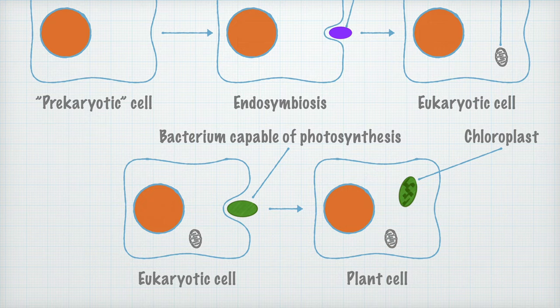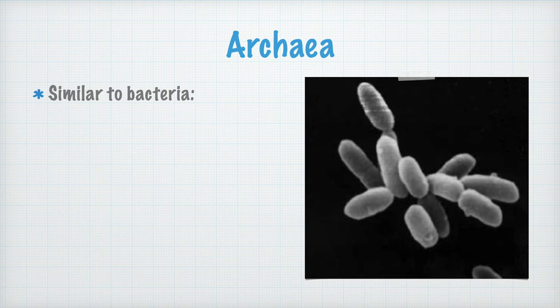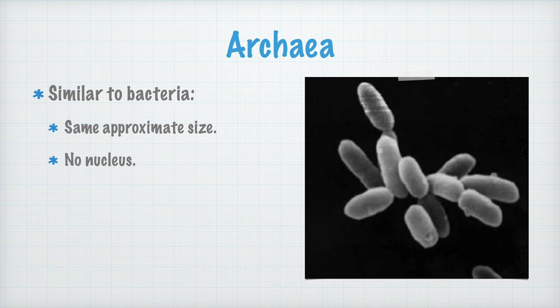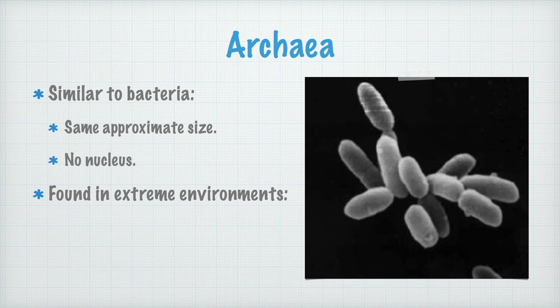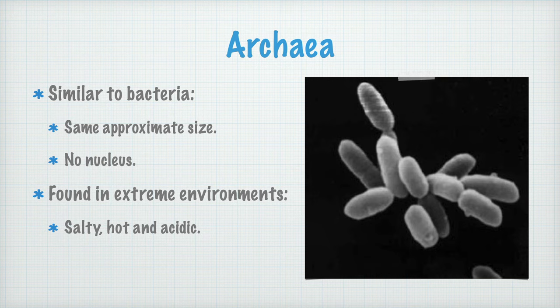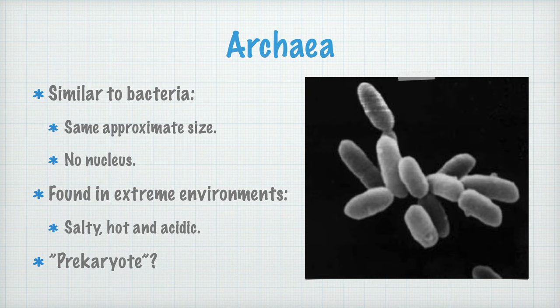Now let's study the archaea. From the looks, they're quite similar to bacteria — approximately the same size, and they both lack nuclei. Something that sets them apart from bacteria, however, is that they are often found in extreme environments: extremely salty, extremely hot, or extremely acidic environments. Their biochemistry is also quite different from bacteria. Because of this, they were considered more original than bacteria, hence the name 'archaebacteria' — literally, old bacteria. But they are not bacteria, and thus should only be called archaea. It probably was an archaeon that was the pre-karyotic cell that eventually evolved into a eukaryotic cell, as we've learned by comparing DNA of Lokiarchaeota organisms to eukaryotic cells.